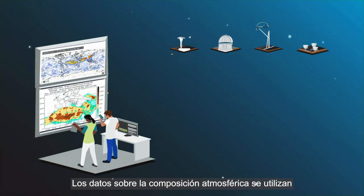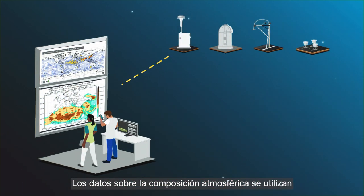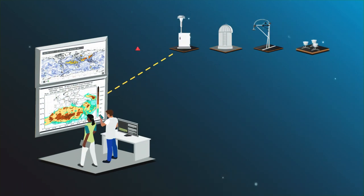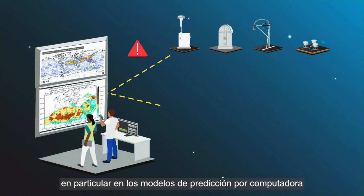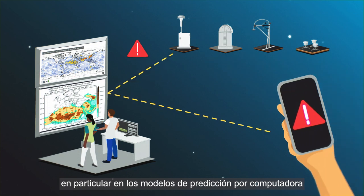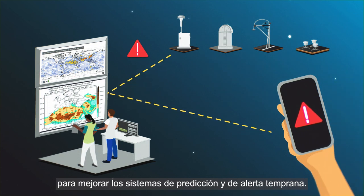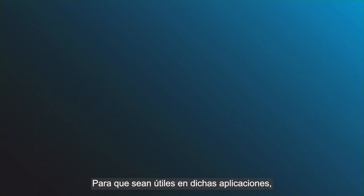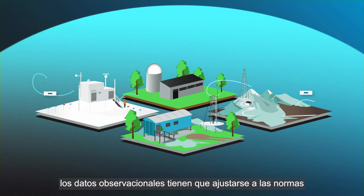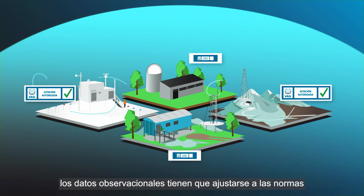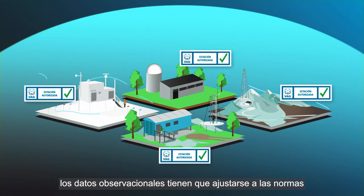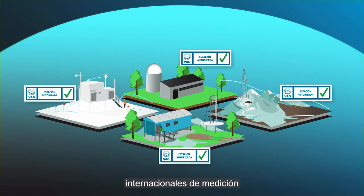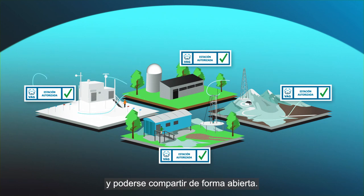Atmospheric composition data are used in many applications including computer prediction models to improve forecasting and early warning systems. To be useful in such applications, observational data have to meet international measurement standards and to be openly shared.